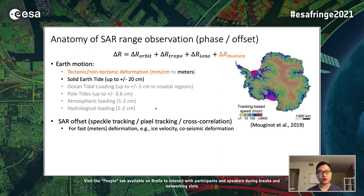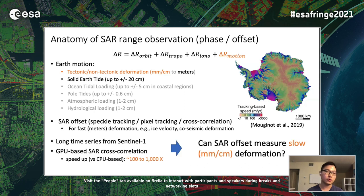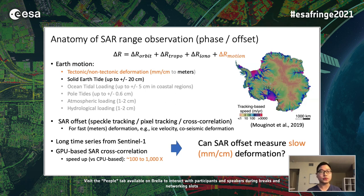SAR offset, also known as speckle tracking, pixel tracking, or SAR image cross-correlation, has traditionally been used to map fast deformation processes such as ice velocities of Antarctica or Greenland or large co-seismic deformations on Earth's surface. However, with the availability of very long time series of SAR images from Sentinel-1 and GPU-based SAR cross-correlation, we are wondering whether we can use SAR offset to measure slow surface deformation in the millimeter and centimeter scale.